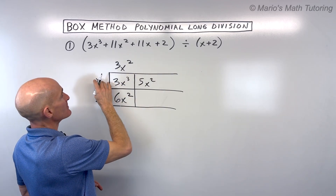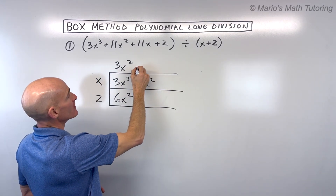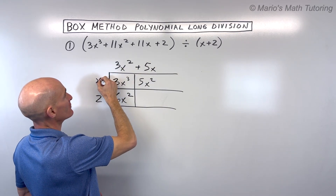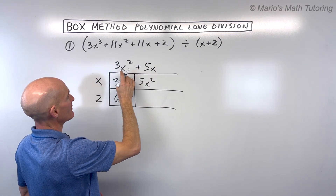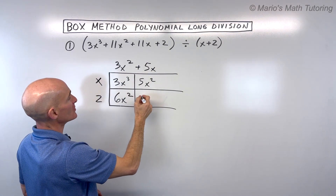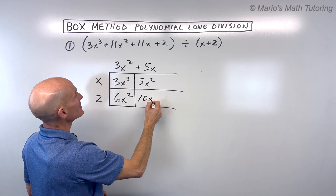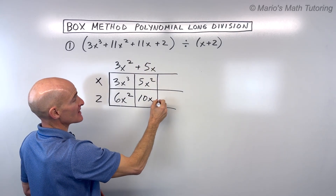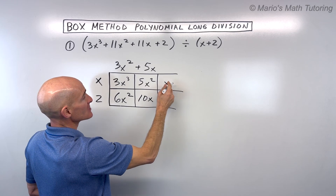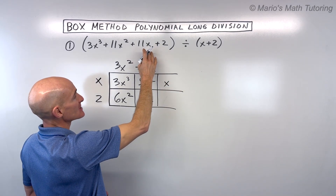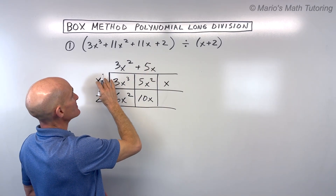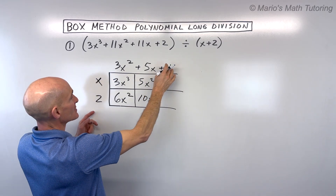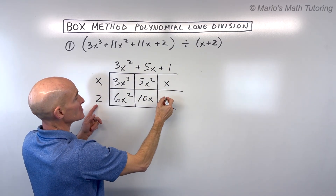So what times x gives me 5x squared? That's going to be 5x. I distribute: 5x times x is 5x squared, and 5x times 2 is 10x. But we have 11x, so that means I need another x — because 1x plus 10x is 11x. What times x is x? That's going to be positive 1. 1 times x is x, and 1 times 2 is 2.